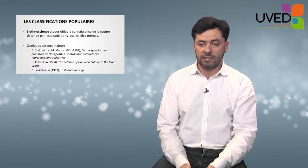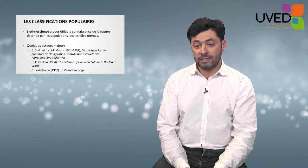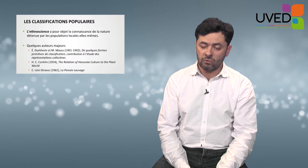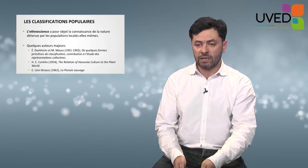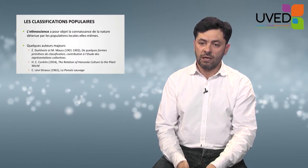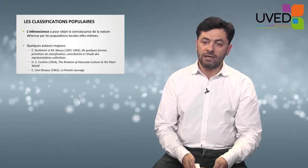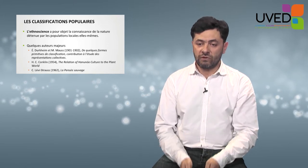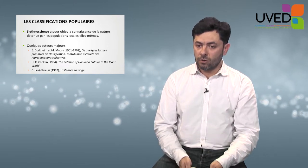Popular classification is at the heart of ethnoscience. Ethnoscience is based on the knowledge of nature held by local populations. If we were to remember a few authors at the origin of ethnoscience, we could mention Durkheim and Mauss, whose article on primitive forms of classification showed that Native American Indians and Aborigines in Australia divide their environment into large categories, including clans, but also animals, plants, artifacts, and natural phenomena.